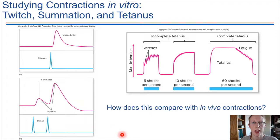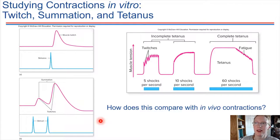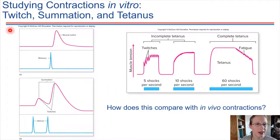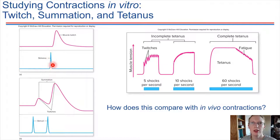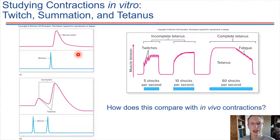There are a few different types of contractions observed when we study muscles in vitro — not in a living system, but by taking a muscle and studying it with artificial electrical stimulation. If we apply just one electrical shock, one stimulus, to a muscle cell, we see something called a twitch: a quick contraction followed immediately by relaxation.